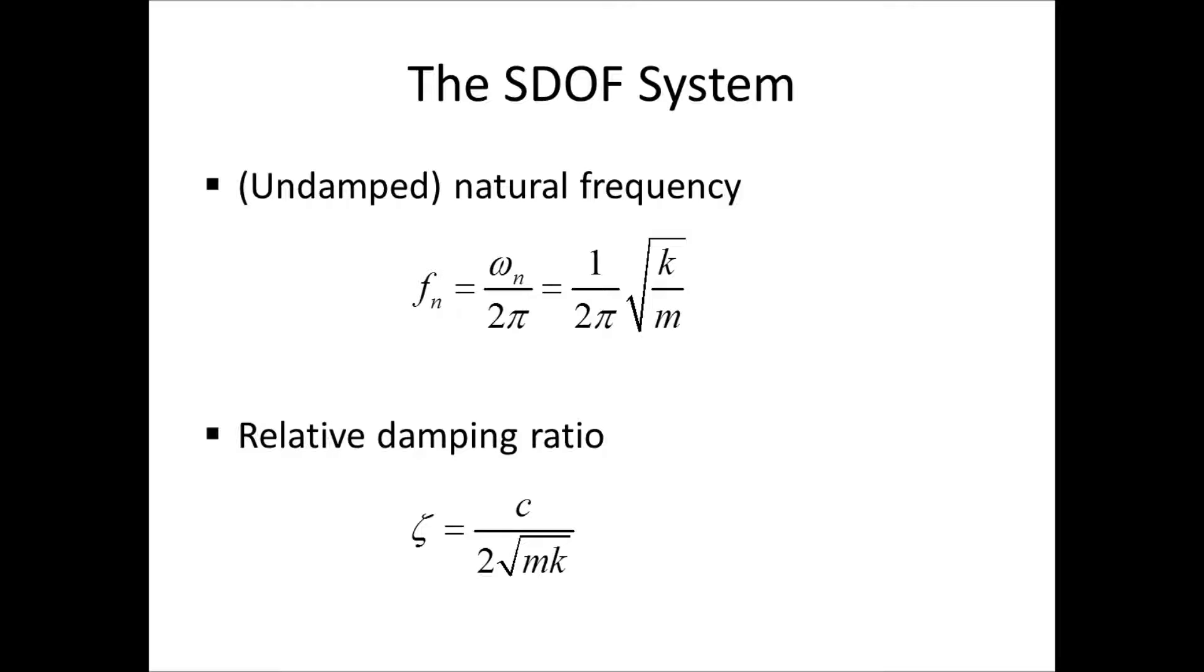And there is also a relative damping ratio that we call zeta, which is the damper c divided by two square root of mass times stiffness.